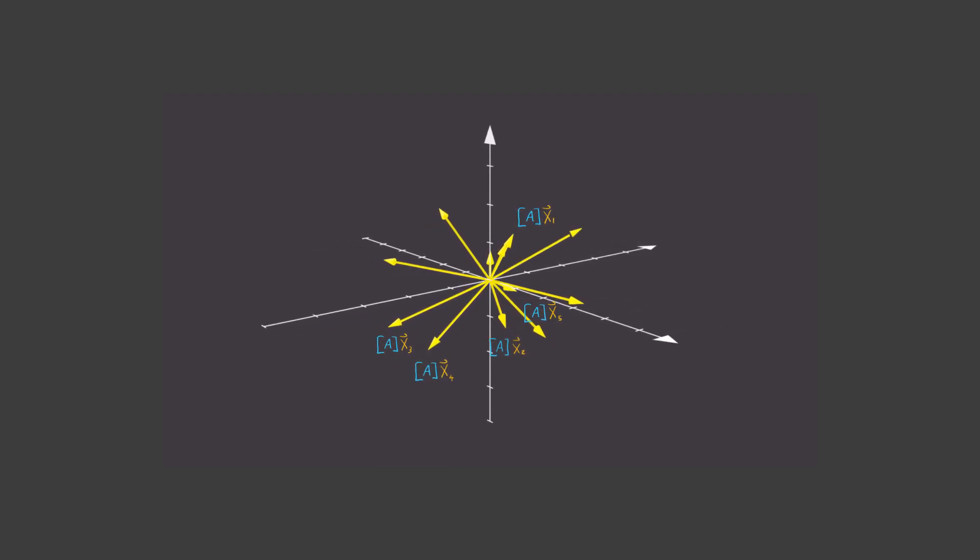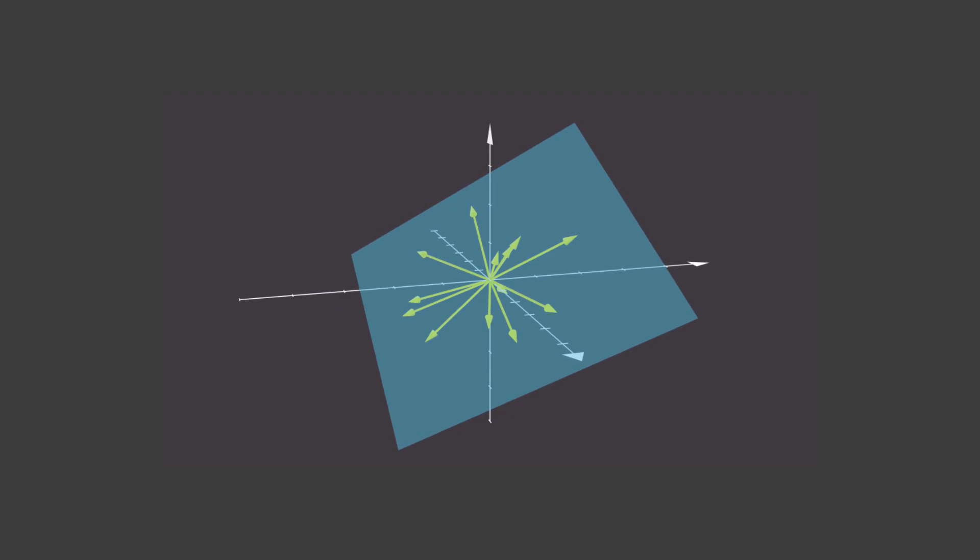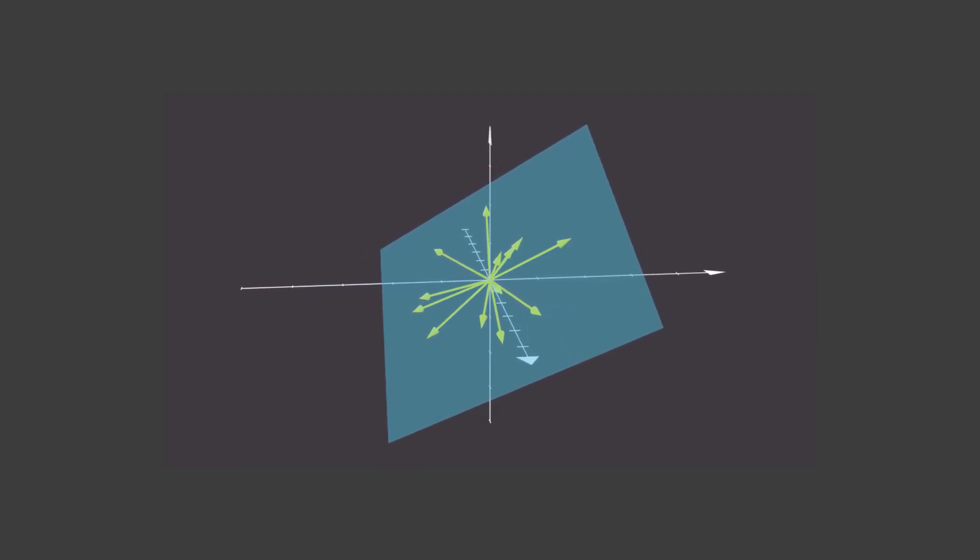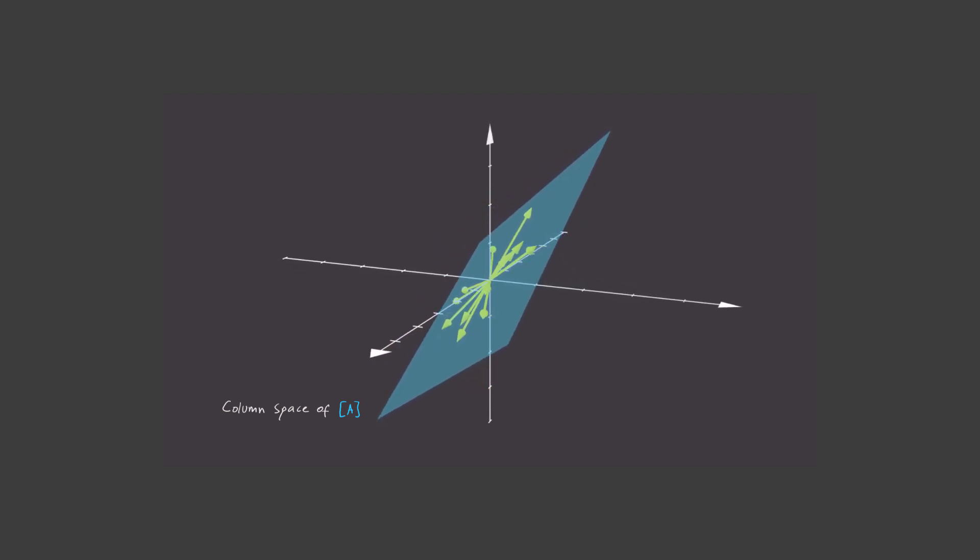Now, amazingly, all of these guesses, as it turns out, will lie on a plane that I'm showing here. This plane is what math nerds call a column space of A. And it's just the set of all possible vectors Ax.